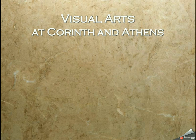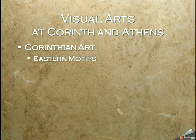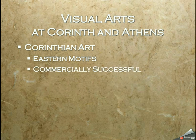We see this in the visual arts at two of the most important city-states: Corinth and Athens. You may know Corinth from the New Testament, where Paul wrote to the Corinthians. In ancient times, Corinth was right on the trade route and one of the most important city-states. In Corinthian art we see Eastern motifs from the Orientalizing of the culture — trading with far-off lands brought these styles into their own art, making Corinth very commercially successful.